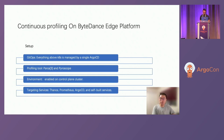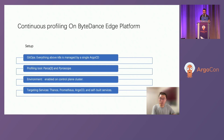This is the setup for continuous profiling on our Edge Platform. Every piece of software above Kubernetes is deployed via GitOps and managed by Argo CD. We have two profiling tools deployed: PACA and Periscope. Currently only the control plane cluster has continuous profiling enabled. All our targeted services run on the control plane cluster, including Thanos, Prometheus, Argo CD, and other self-built services like resource manager, billing, and ticket system.